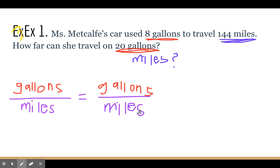Okay, so I have 8 gallons over 144 miles, so I have my 8 over 144, and then equals. And we have 20 gallons and we don't know how many miles, so we're going to put our 20 gallons at the top. And then since we don't know how many miles, we're just going to put a variable, say X.